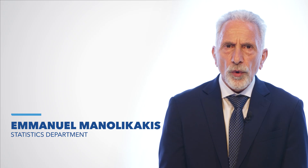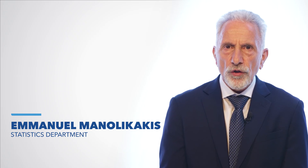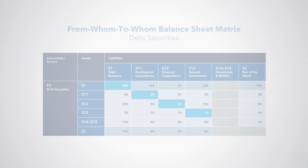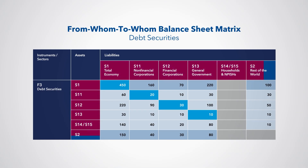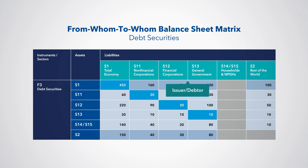In this video, we take a portion of the from-whom-to-whom balance sheet matrix for one instrument, debt securities. The table shows the assets and claims related to debt securities among all sectors and the rest of the world, and the interlinkages between these sectors. Note that, at this point in time, the balance sheet matrix shows the stock of debt securities issued by each sector in the columns, and the sectors holding these outstanding debt securities in the rows.